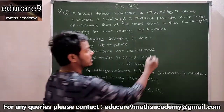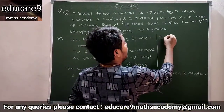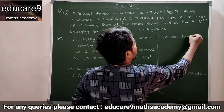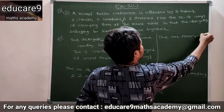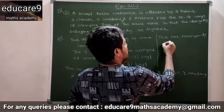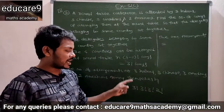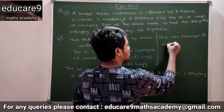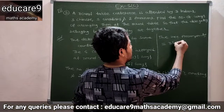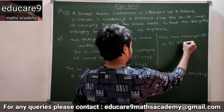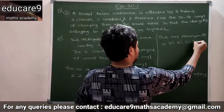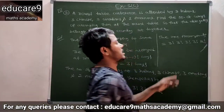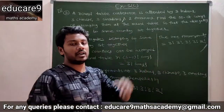So therefore the required arrangements is equal to three factorial into three factorial into three factorial into three factorial into two factorial. This is the required arrangements.